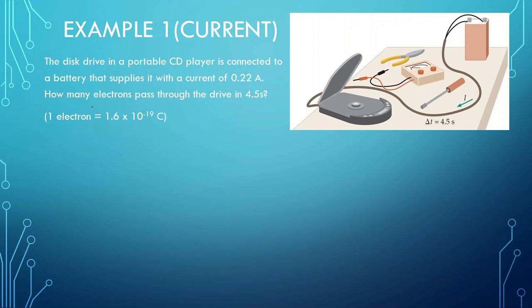The disk drive — a portable CD player — is connected to a battery that supplies it with a current of 0.22 amps. How many electrons pass through the drive in 4.5 seconds? So we can see this battery here. What it does is it provides — it pushes out these electrons that flow through this wire and goes through the CD player like this.